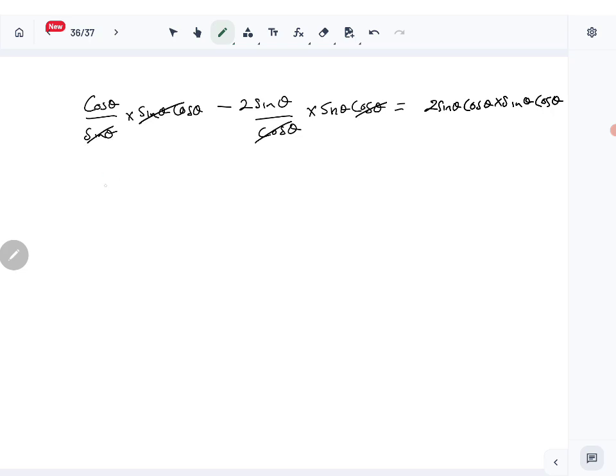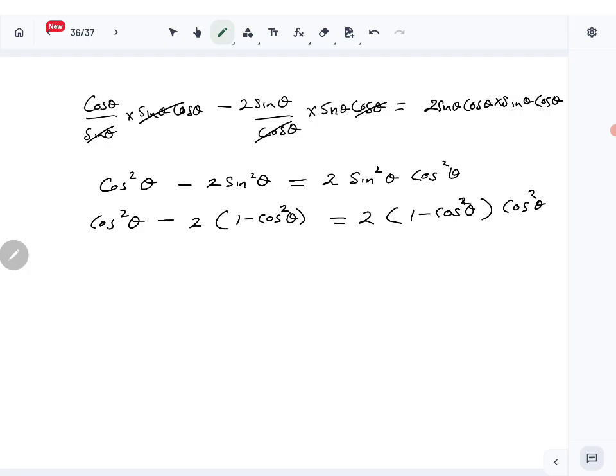Cancel, cancel. There you get cos square theta minus 2 sin square theta, 2 sin square theta cos square theta. So everything now turn to cos, so replace sin square theta with 1 minus cos square theta, then expand the brackets and simplify. Cos square theta minus 2 plus 2 cos square theta, 2 cos square theta minus 2 cos to the 4 theta.